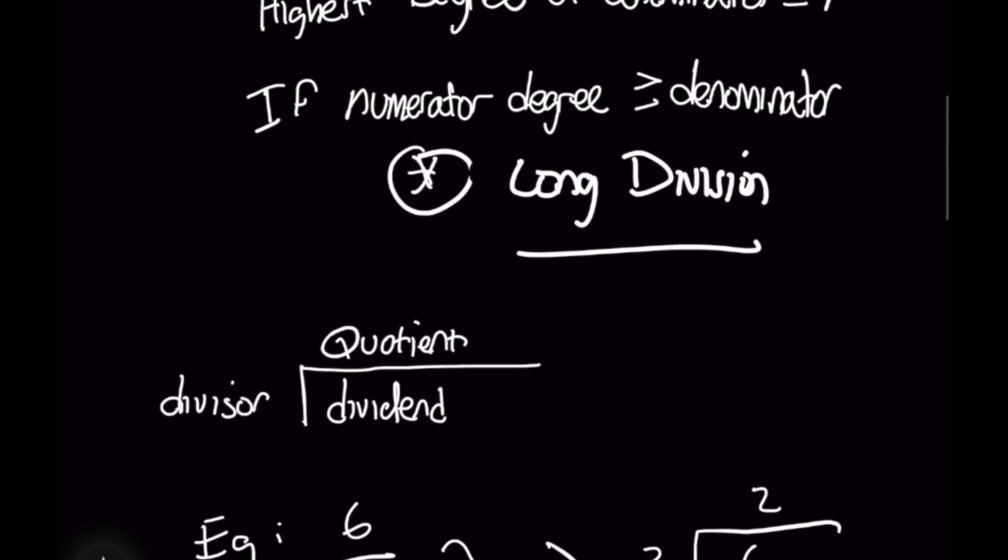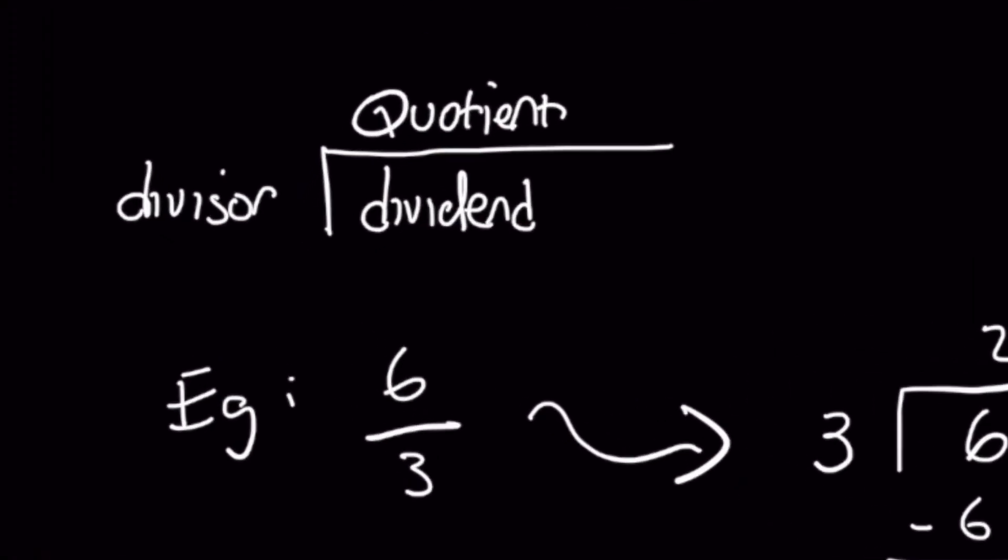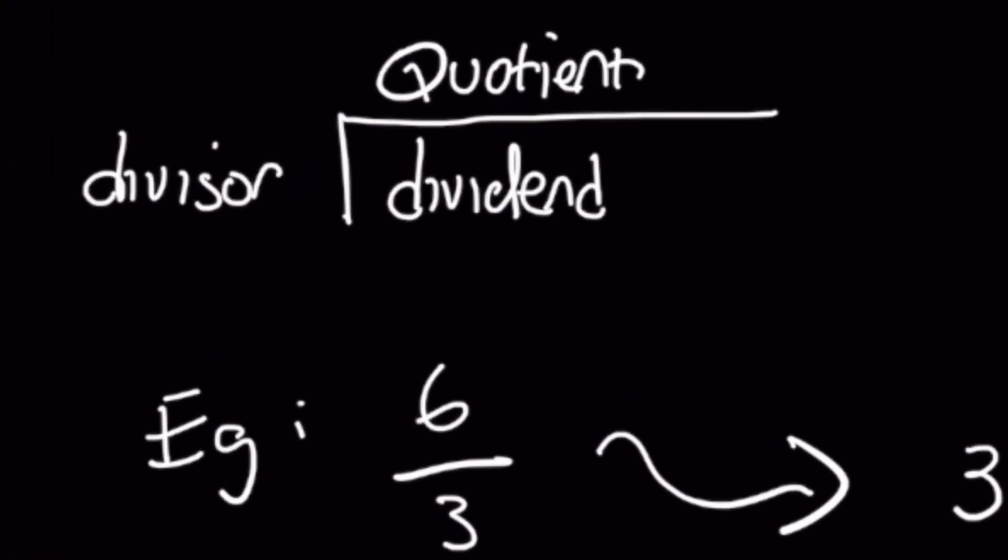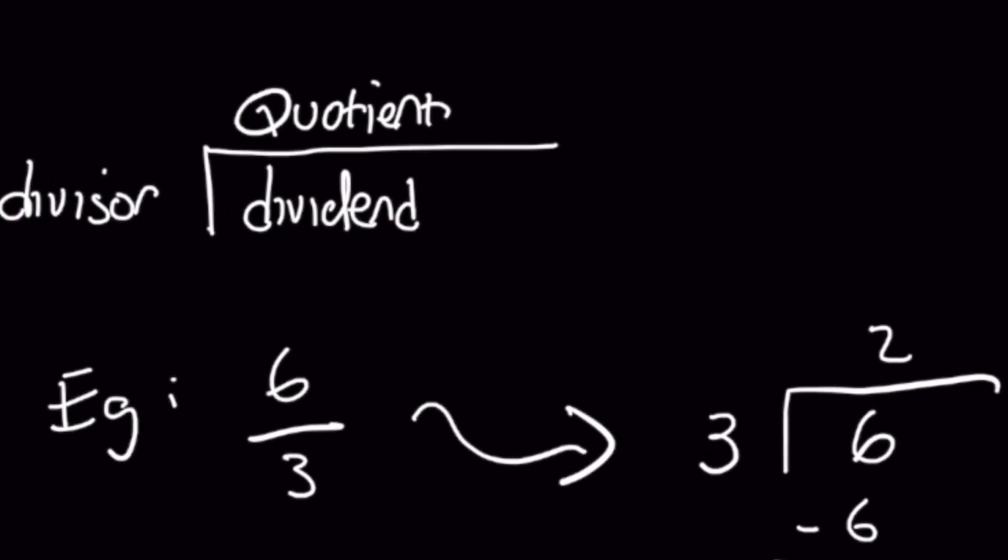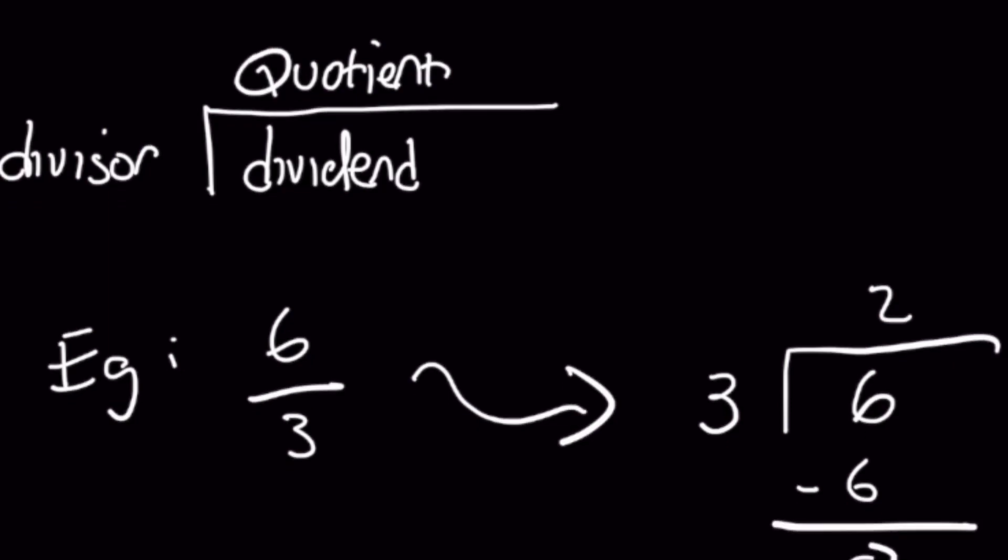So for normal division let's take 6 divided by 3 for example. Remember that you have three components: a divisor, a dividend, and a quotient. In this case 3 is going to be your divisor. Your dividend is 6 which goes under the bracket and then from left to right what we do is we say how many times does 3 go into 6 and the answer is 2.